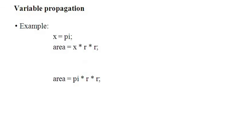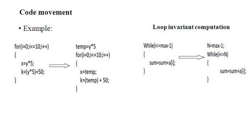Next is variable propagation. Variable propagation means use of one variable instead of another. For example, x = pi, then area = x * r * r. Here first the value of pi is stored in another variable x, then x is used. The optimization using variable propagation can be done as: area = pi * r * r, where the variable x is eliminated. The necessary condition is that a variable must be assigned to another variable or some constant.